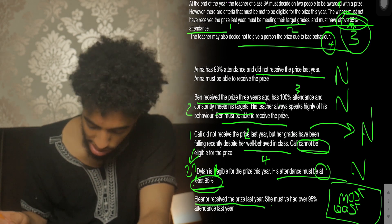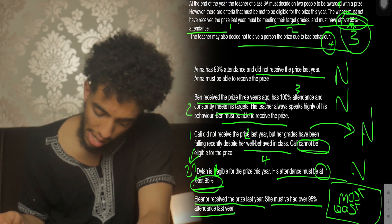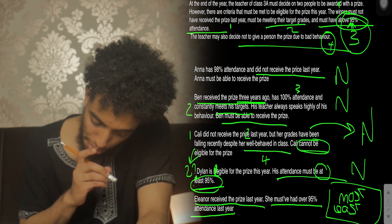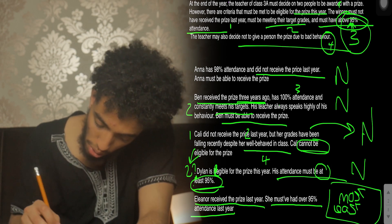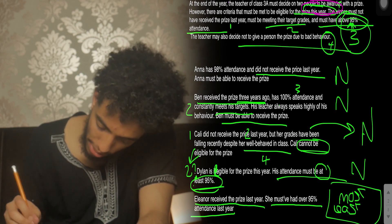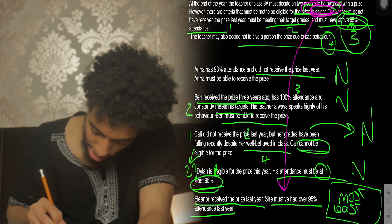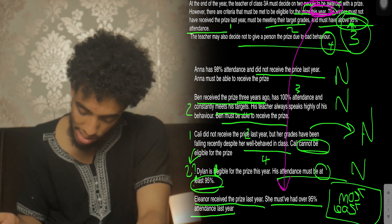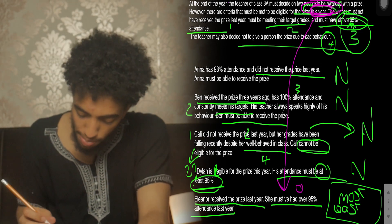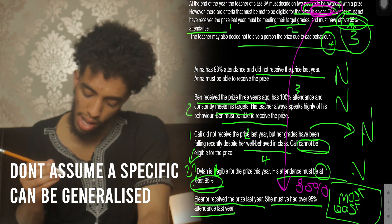Statement five: Eleanor received the prize last year, so she must have had over 95% attendance last year. Reading the passage again, the criteria stated is specifically for this year. We do not know what criteria was used the year before — the attendance requirement to receive the prize last year could have been 85%, for example. We're only told half the story, so it's vital to look for that loophole.